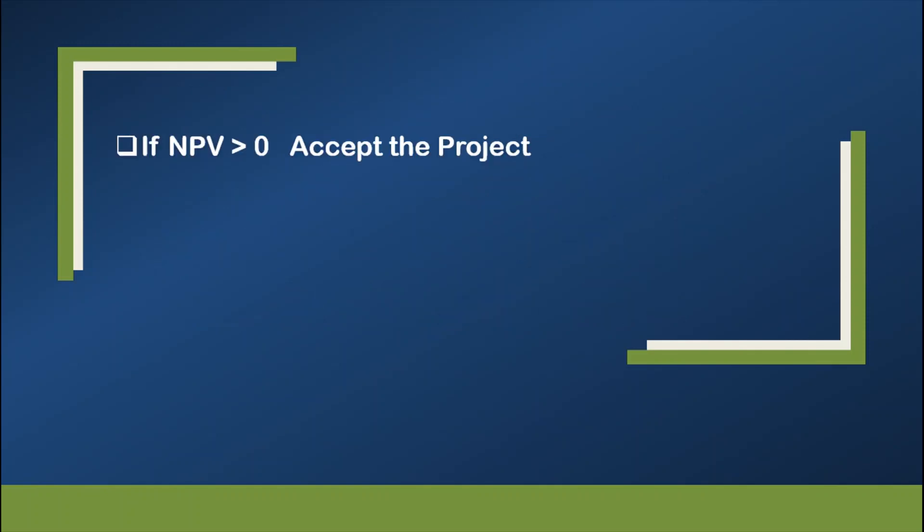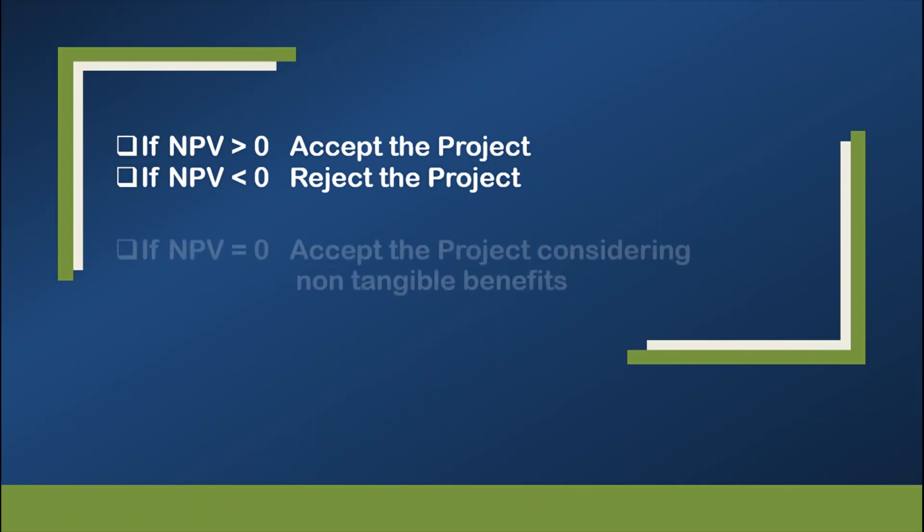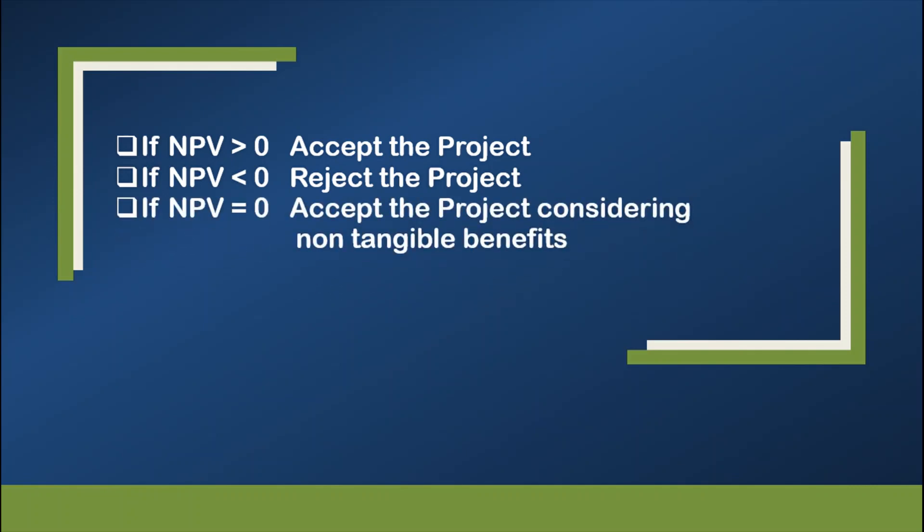To consider this criteria: if NPV or the net present value is greater than zero, then we accept the project. But if NPV is less than zero, then reject the project. But if the NPV is equal to zero, you may accept the project considering non-tangible benefits.